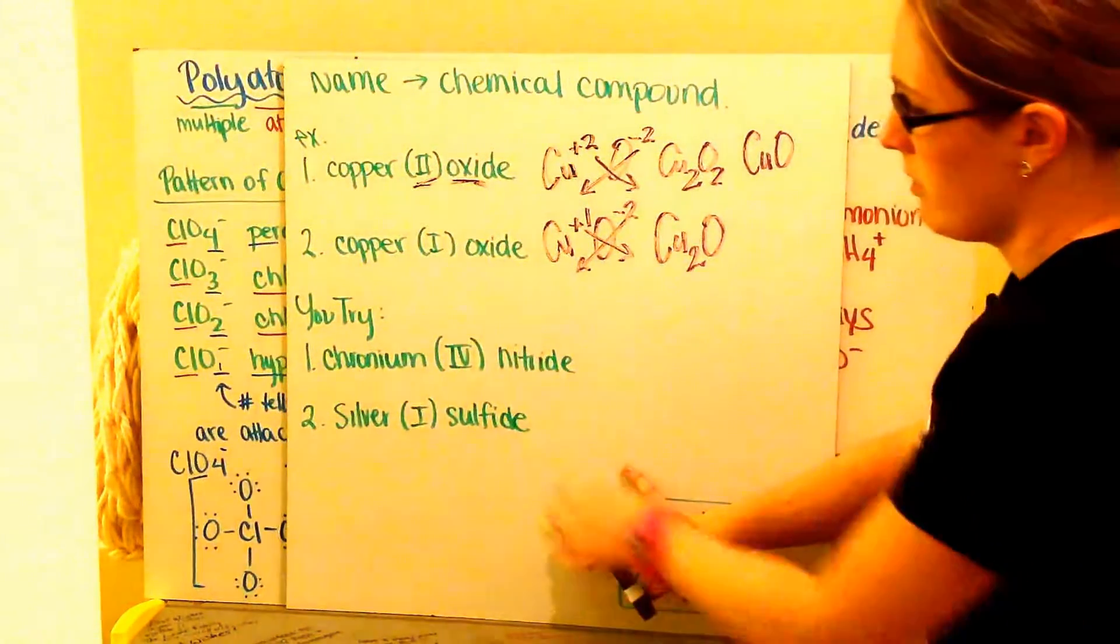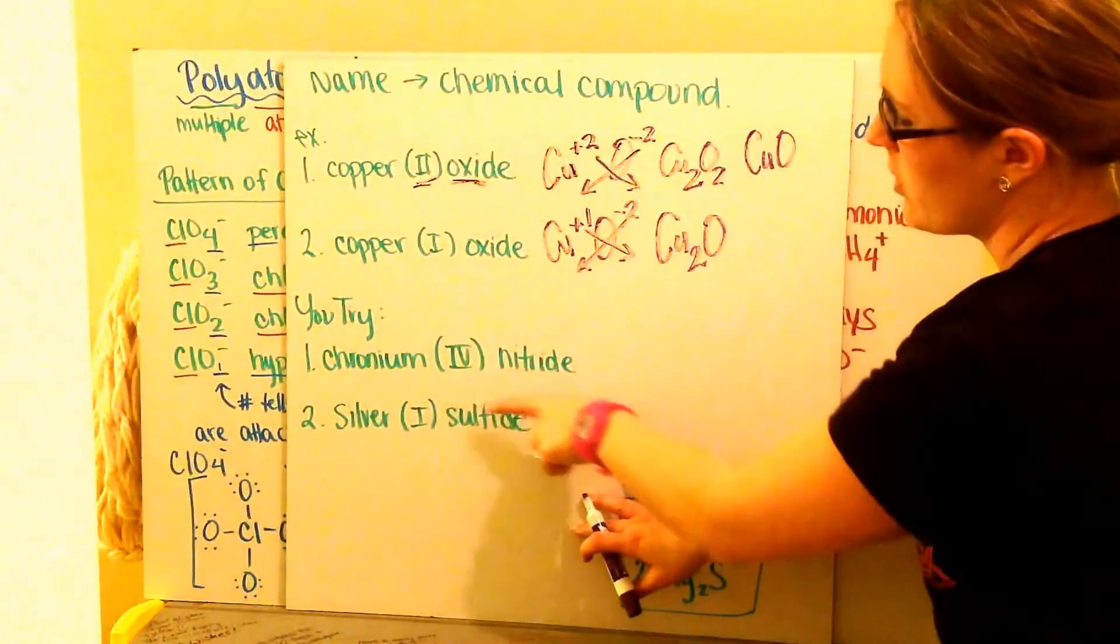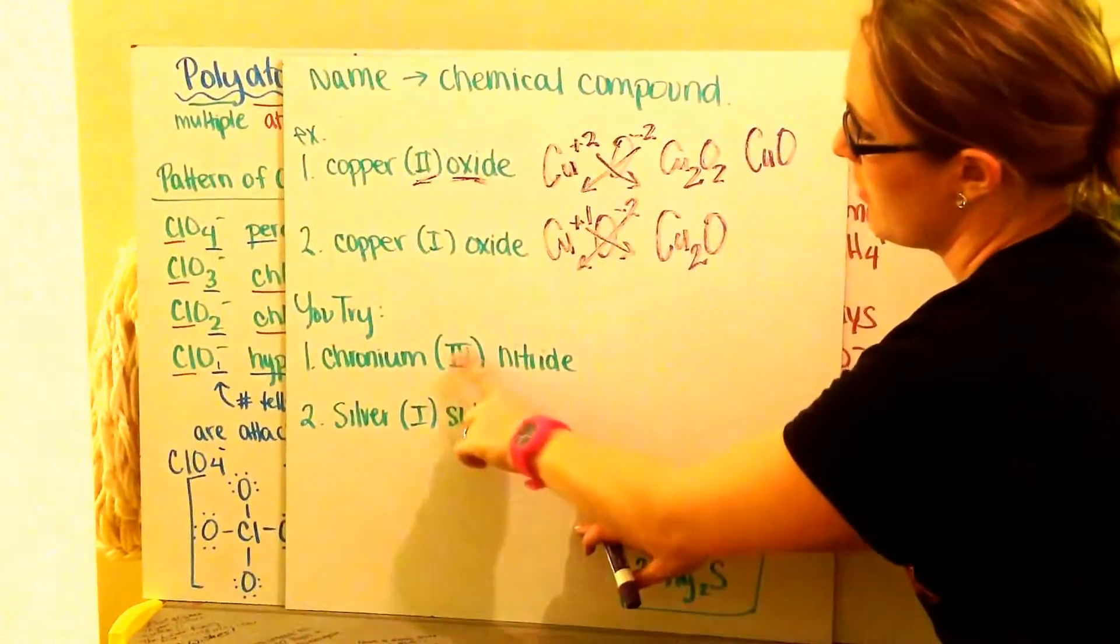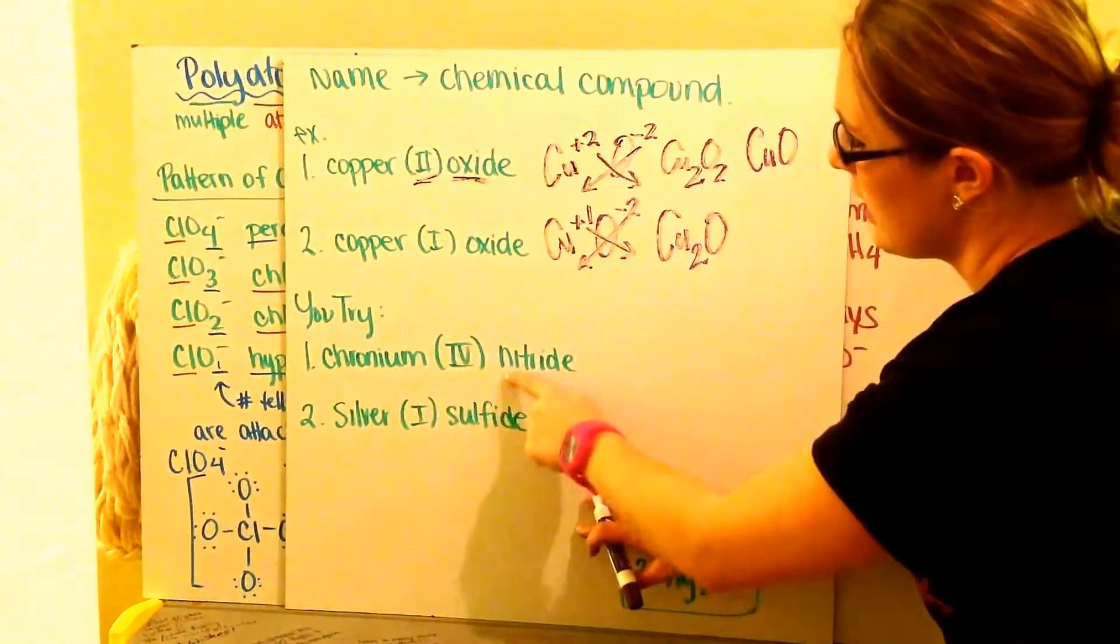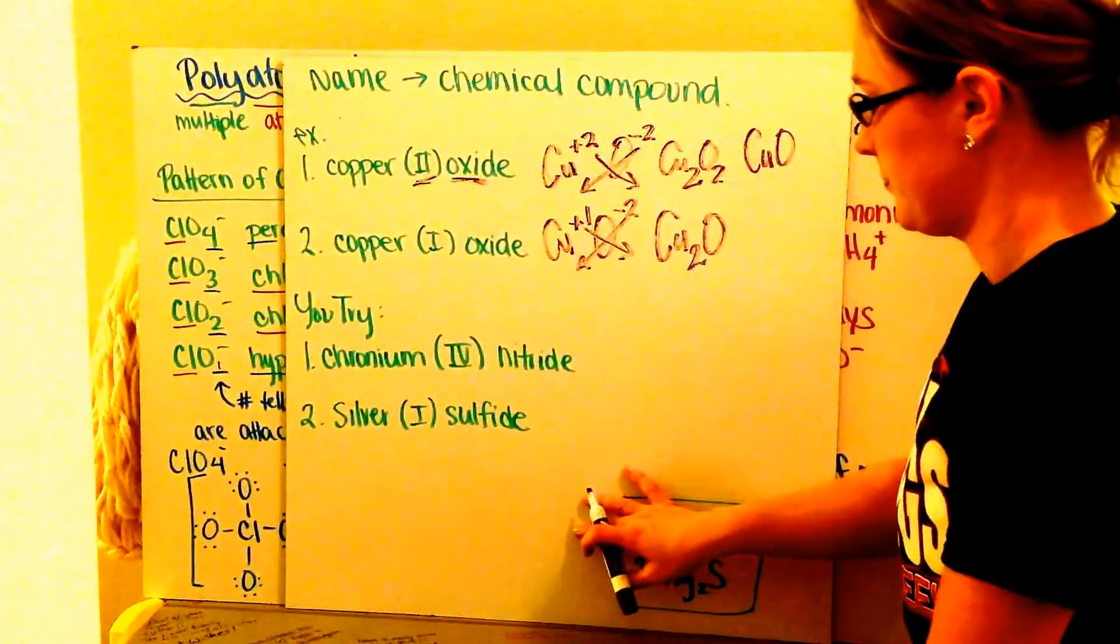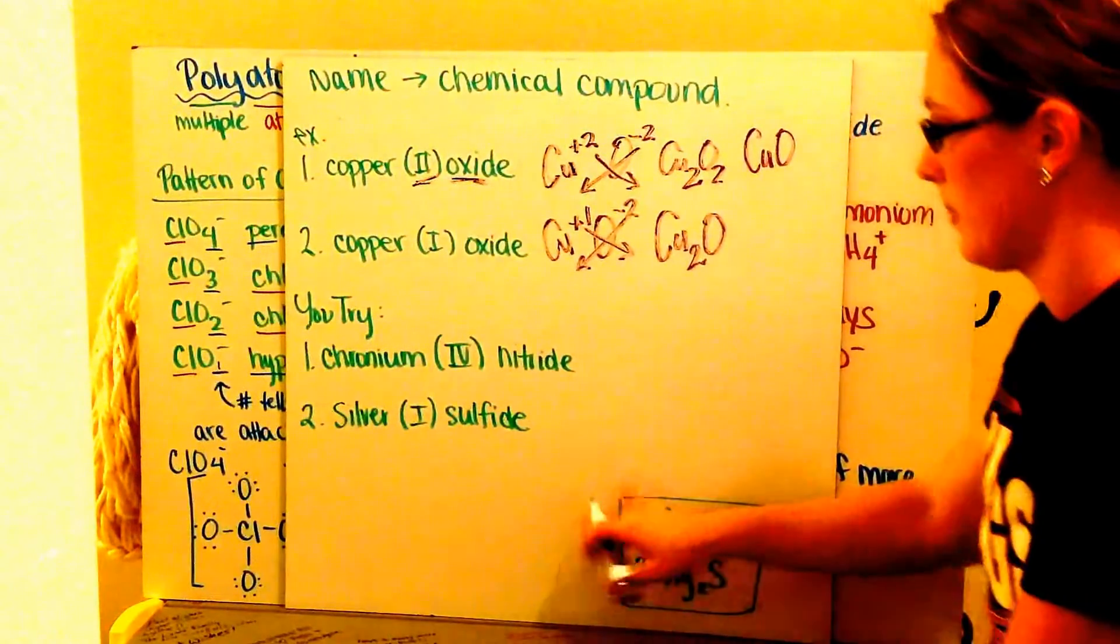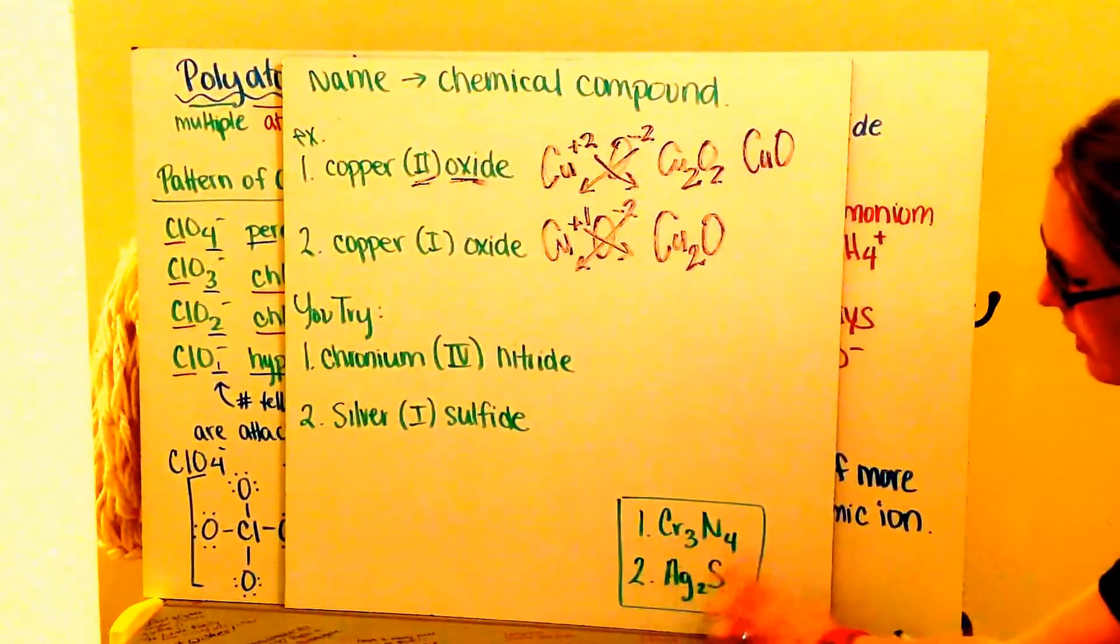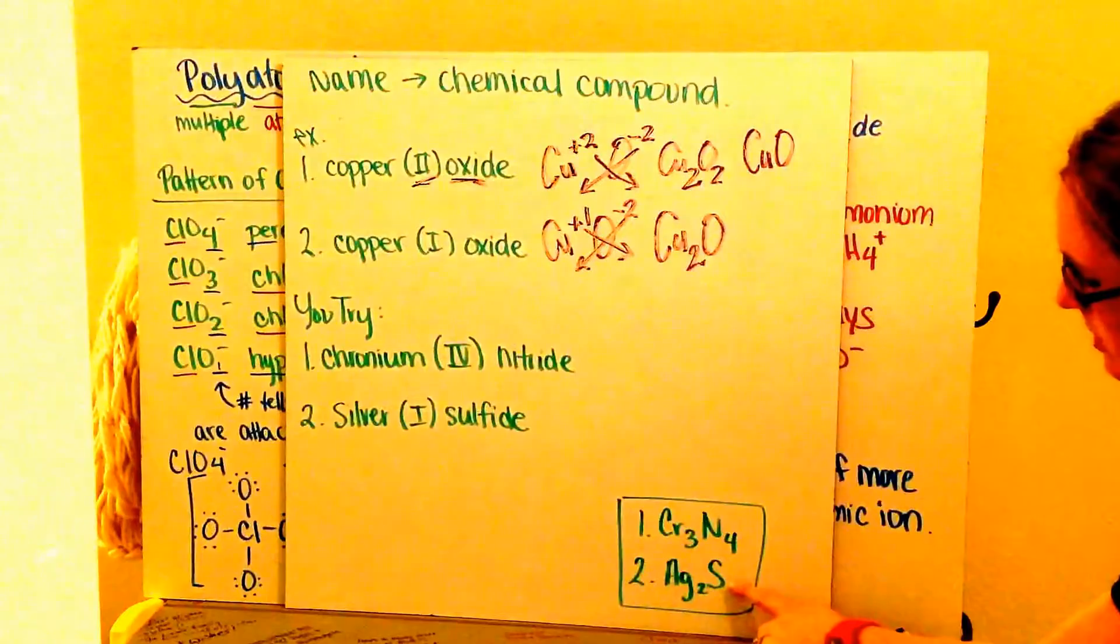Go ahead now and try chromium (IV) nitride, silver (I) sulfide. Knowing my roman numerals tell me my charges, then I just need to determine what anions I have. You should have got Cr3N4 and Ag2S.